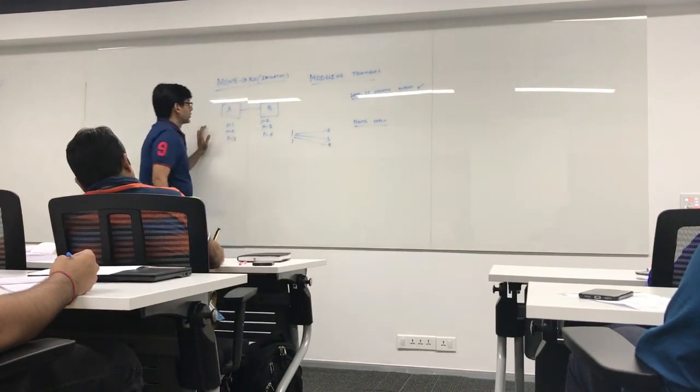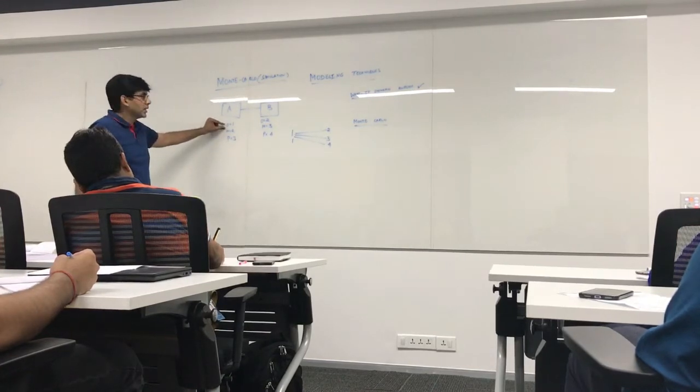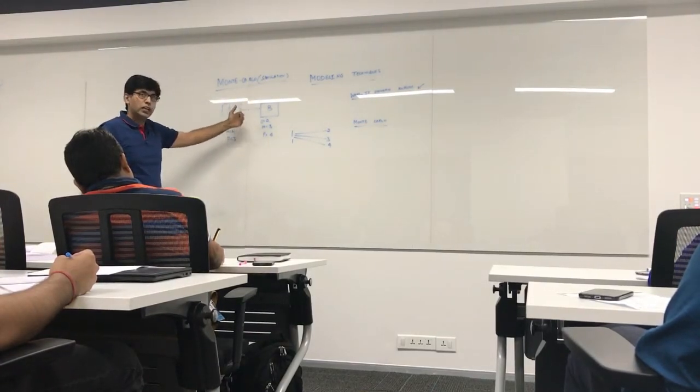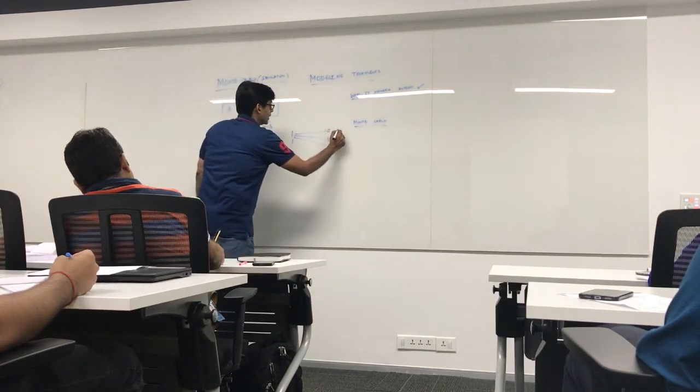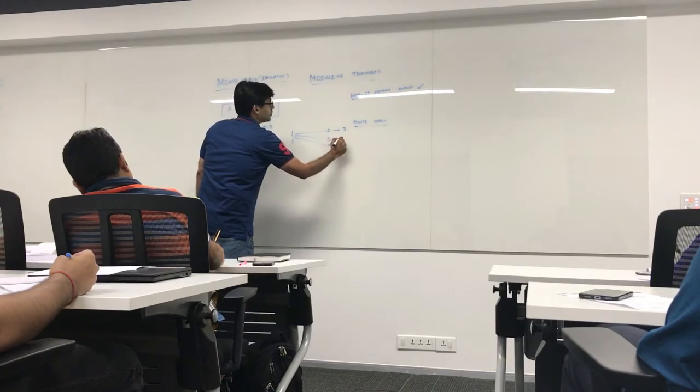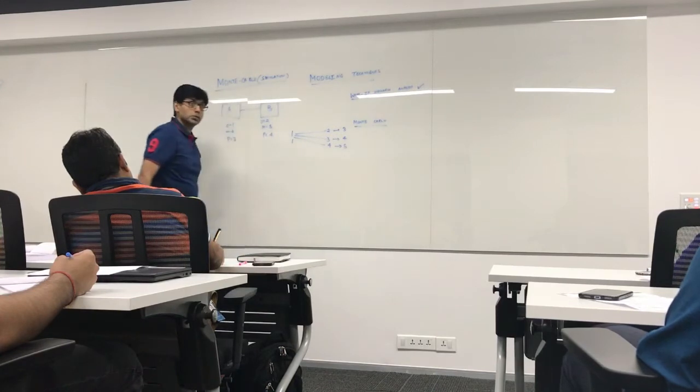Now, so A is in optimistic and B I have taken all the cases. I get following duration for the project. Project can be completed in 3 days also, can be completed in 4 days also, can be completed in 5 days also. Now let's see other combinations also.